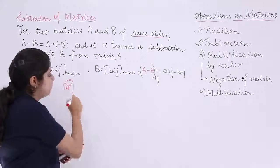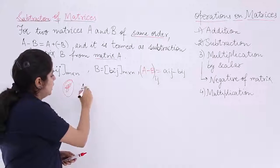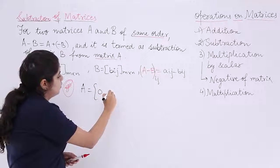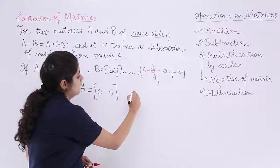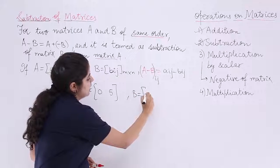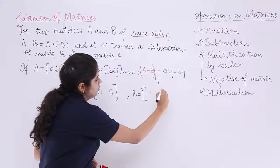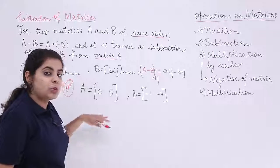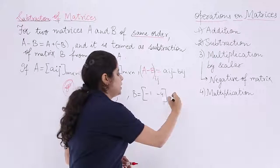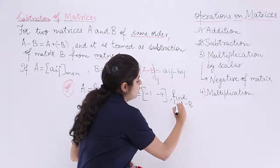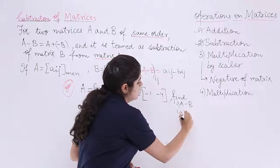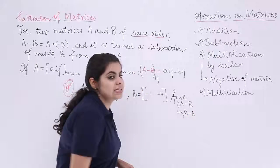An example to the same would be a matrix A given to me as [0 5], another matrix B given to me as say [-1 -4]. Now the question tells me to find out A minus B and also another part is given to me to find out B minus A.